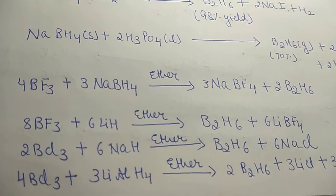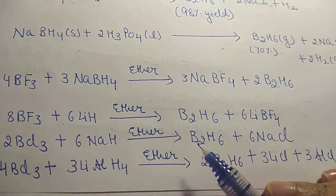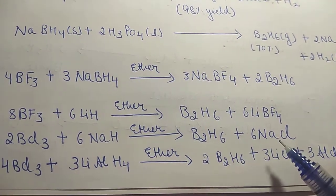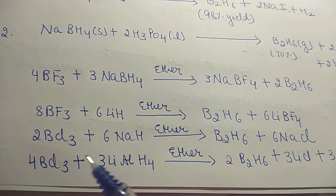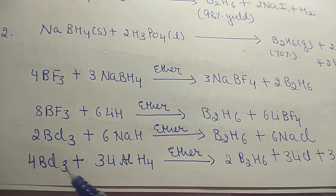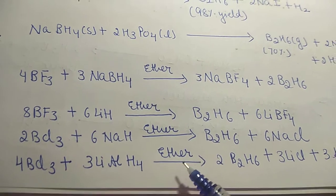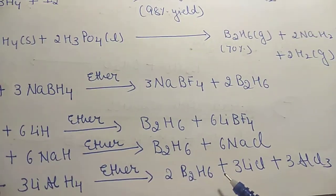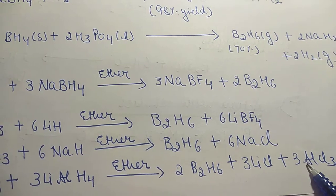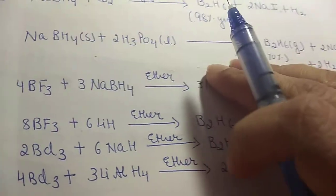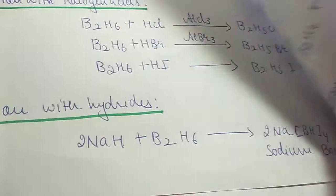BCl3 when treated with NaH sodium hydride in the presence of ether gives B2H6 and NaCl. Then BCl3 treated with lithium aluminium hydride in the presence of ether gives B2H6, lithium chloride, and aluminium chloride as byproducts.